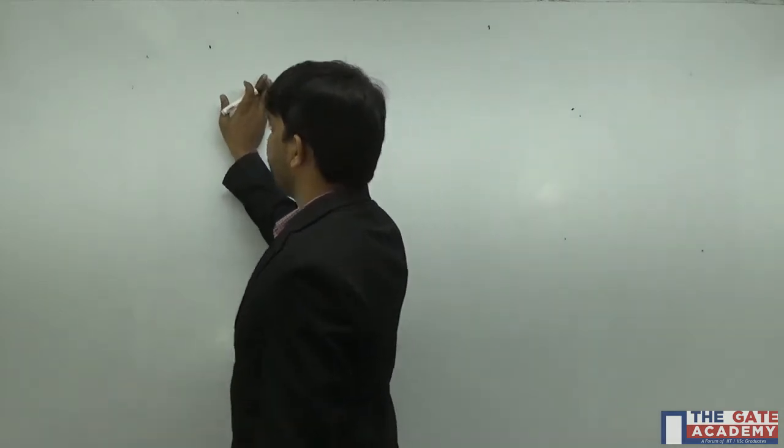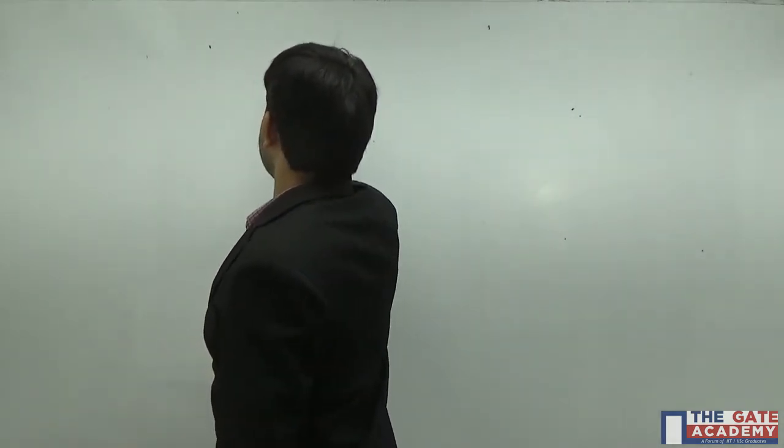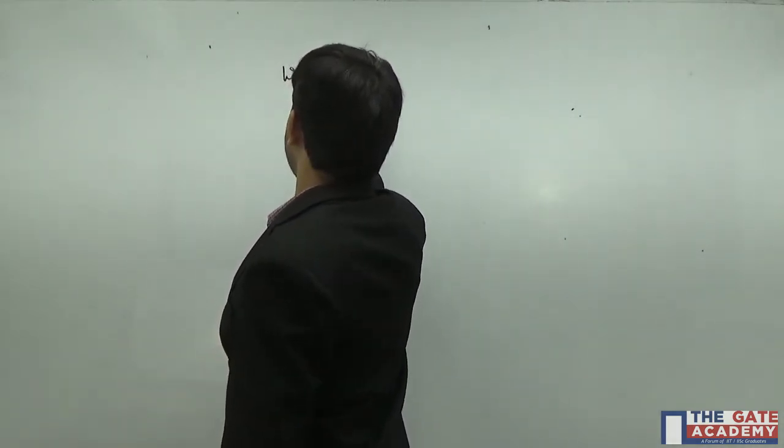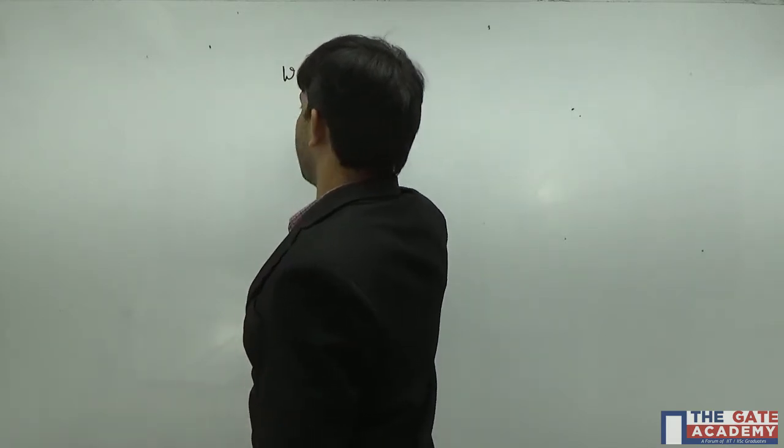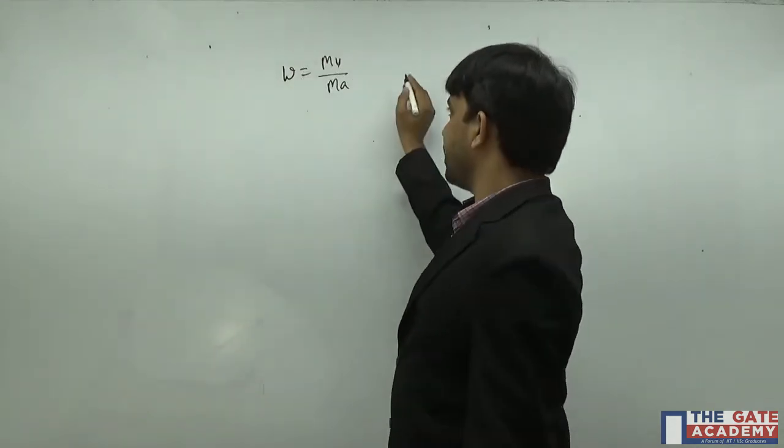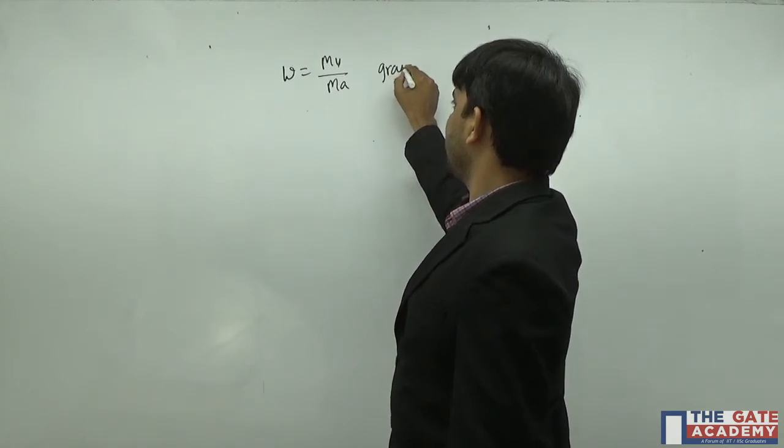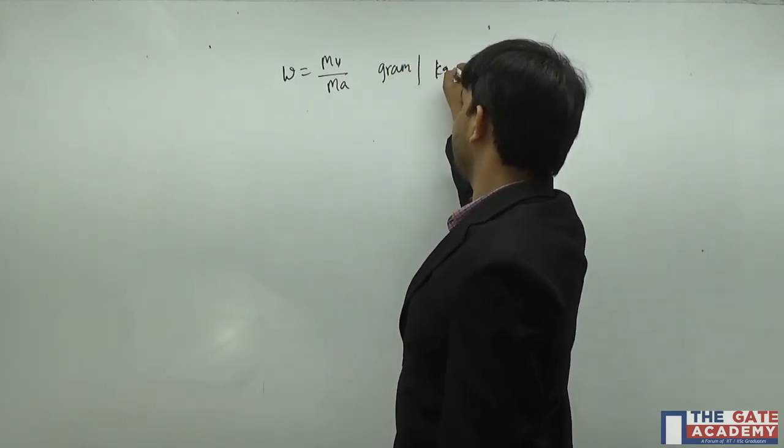Generally specific humidity is nothing but mass of water vapour to mass of dry air, kg of water vapour to kg of dry air. Here he is asking us to get the value of gram of water vapor per kg of dry air.